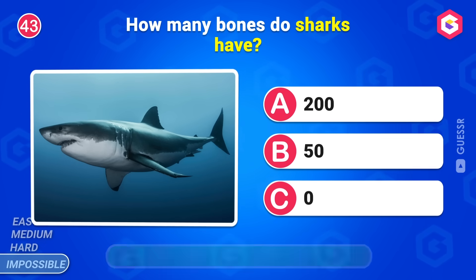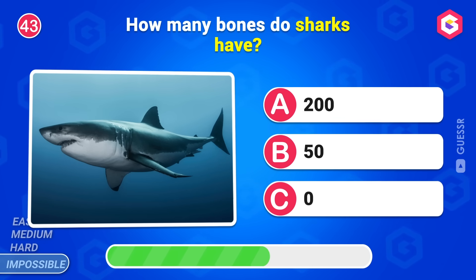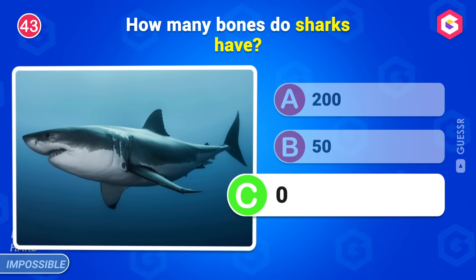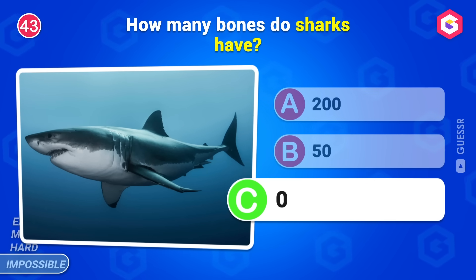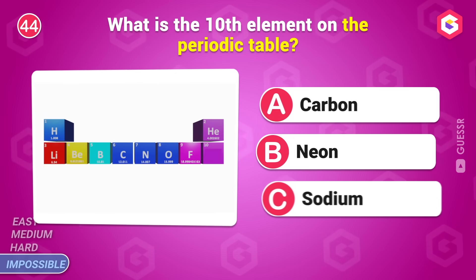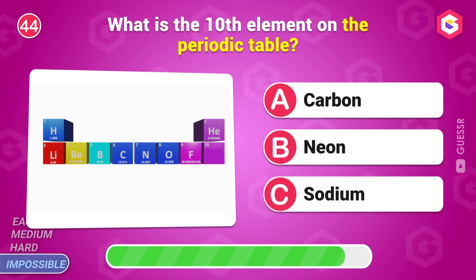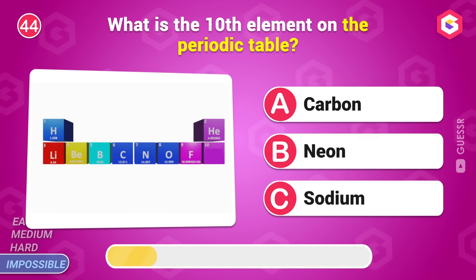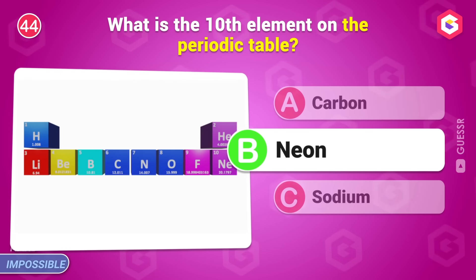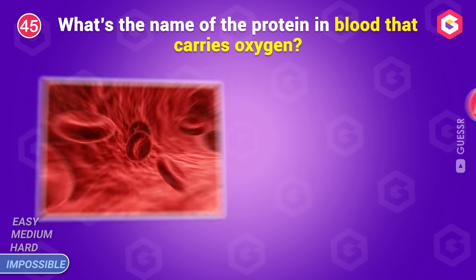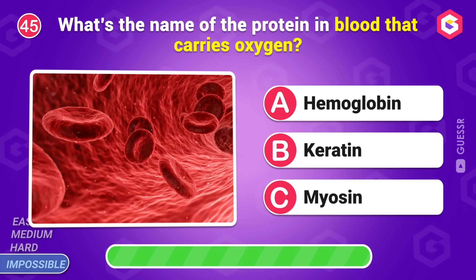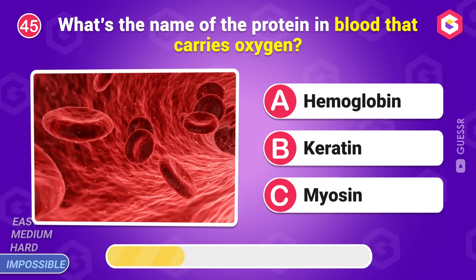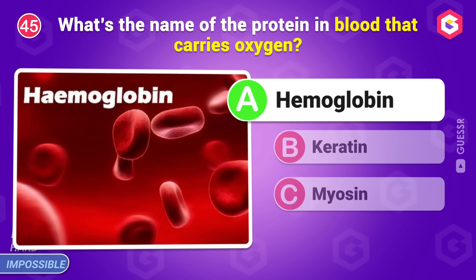How many bones do sharks have? Zero. What is the tenth element on the periodic table? Neon. What's the name of the protein in blood that carries oxygen? Hemoglobin.